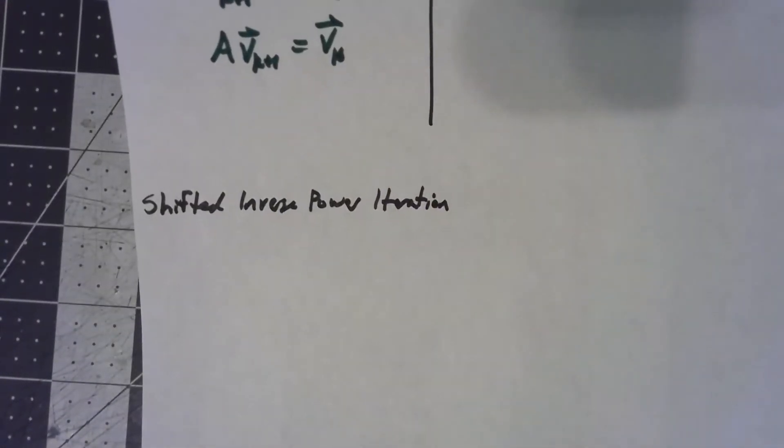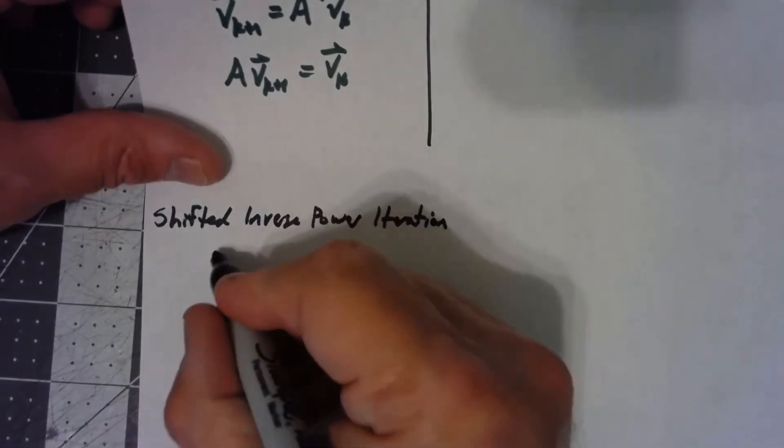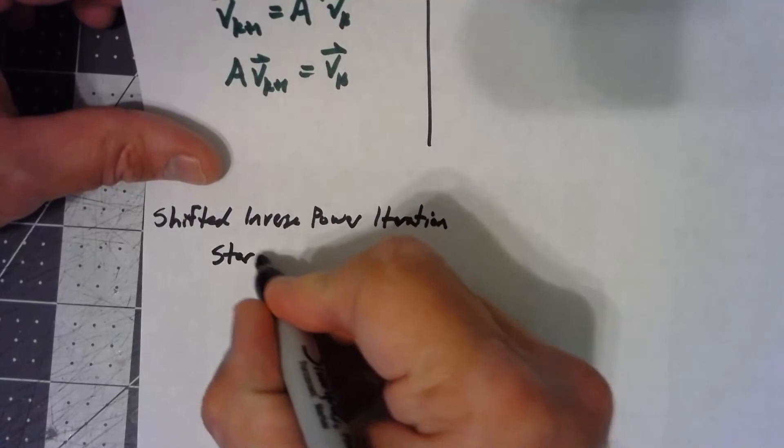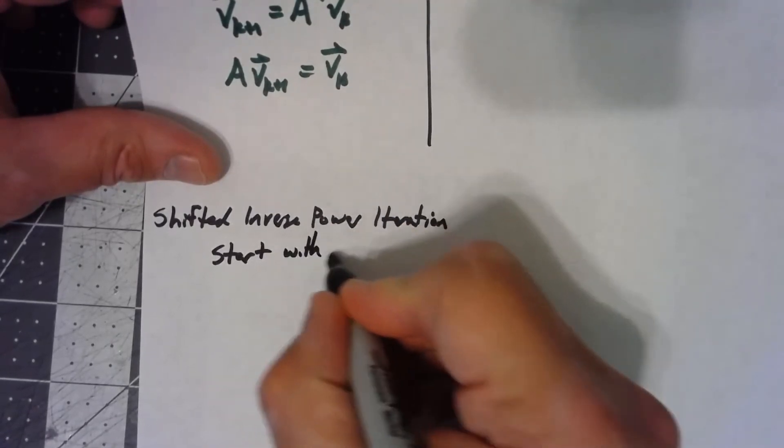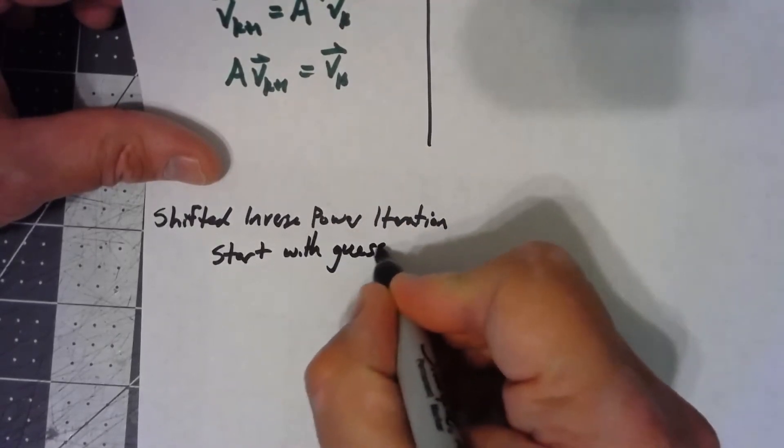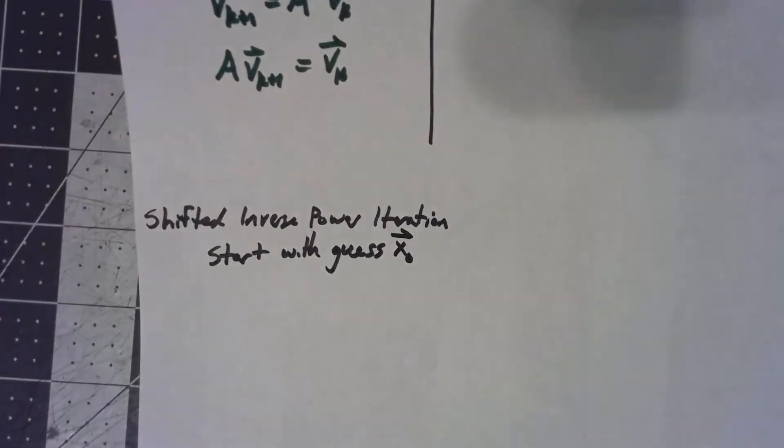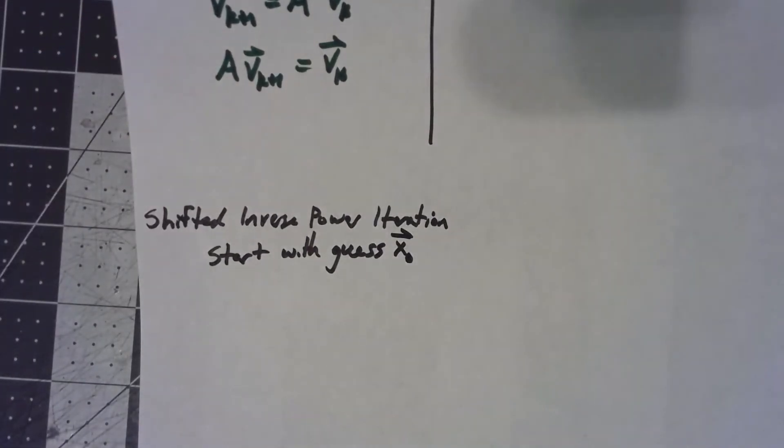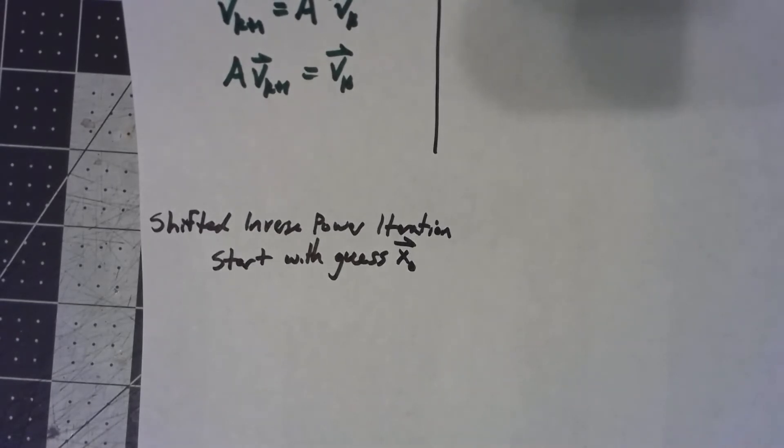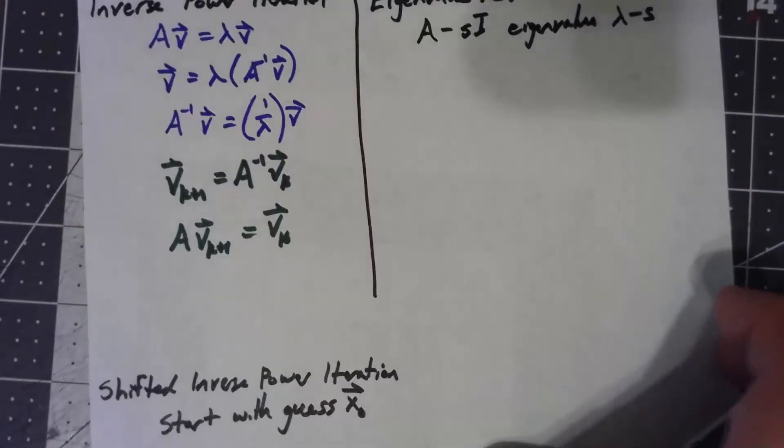So let's put that together into a little algorithm. We're going to start with a guess, just like before. And then what we're going to do, we'll also start with a shift.